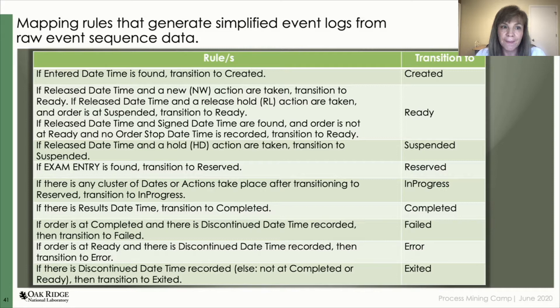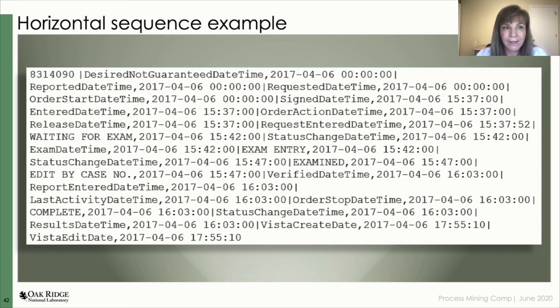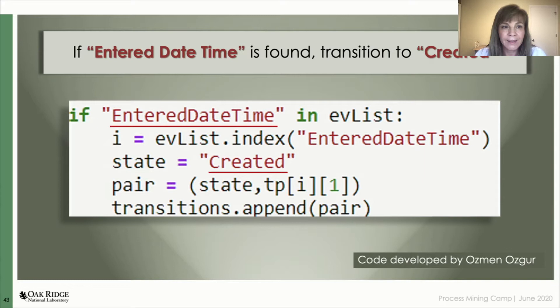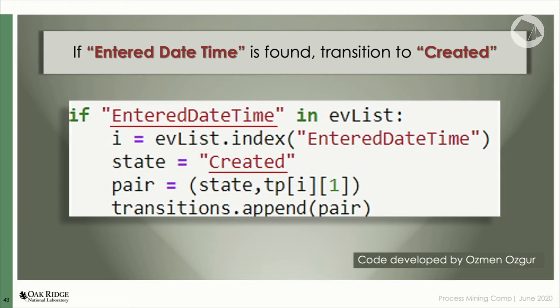For example, if the 'enter date time' event is found in the sequence, then this signals that the sequence transitions to the 'created' state. Another example: if the 'release date time' event and the 'new action' event are found in the sequence, then those activities map the sequence to transition to 'ready', and so on, until the sequence presents the 'results date time' activity, then it transitions to 'complete'. Or if an order is in the complete state and there is a 'discontinued date time' recorded, then it transitions to 'fail'. The code to apply these rules was written in Python 3 and is a simple parsing code.